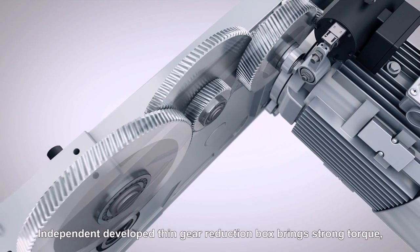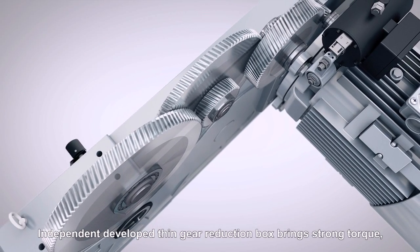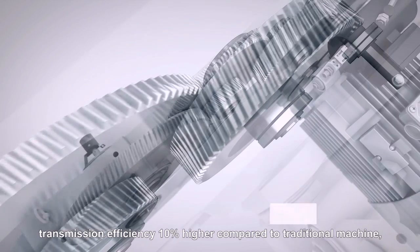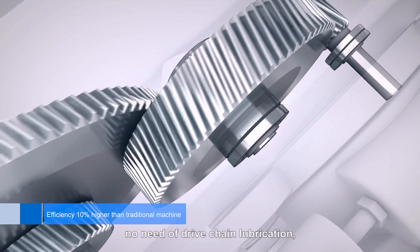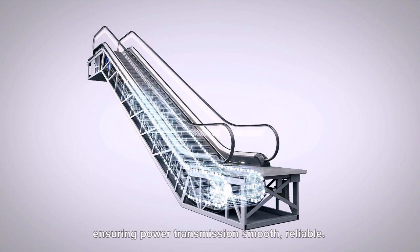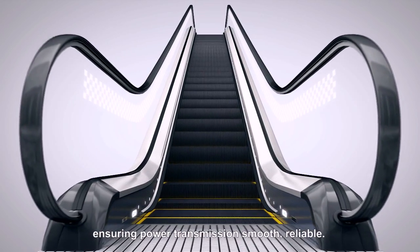Independent developed thin gear reduction box brings strong torque. Transmission efficiency 10% higher compared to traditional machine. No need of drive chain lubrication. Environmental protection and energy saving. Ensuring power transmission smooth. Reliable.